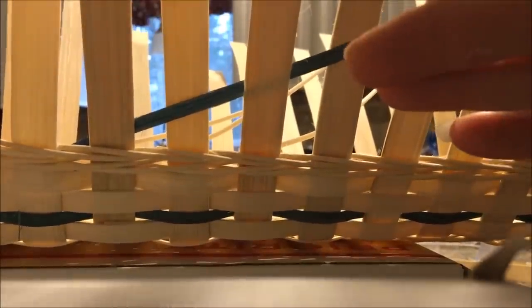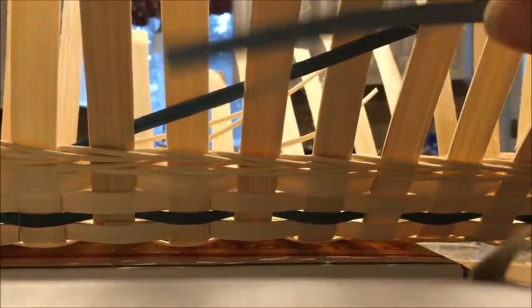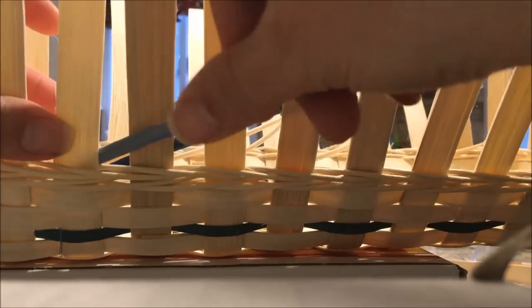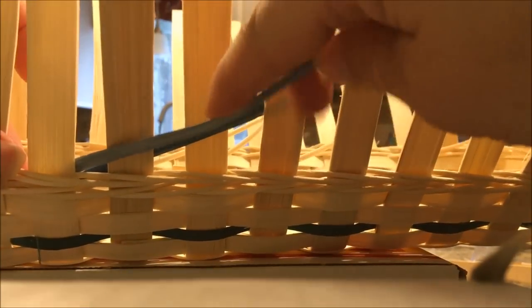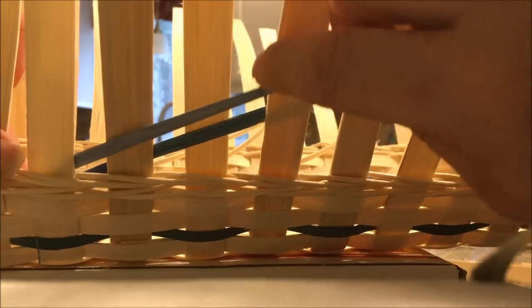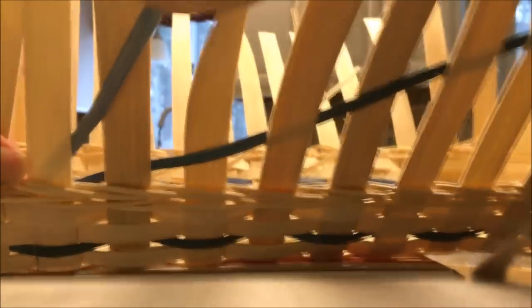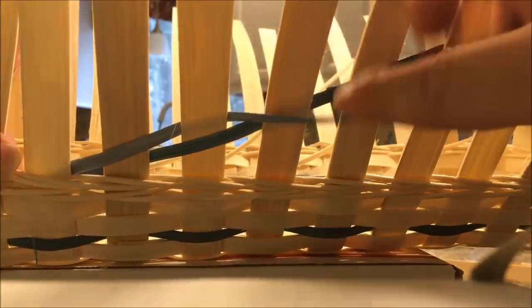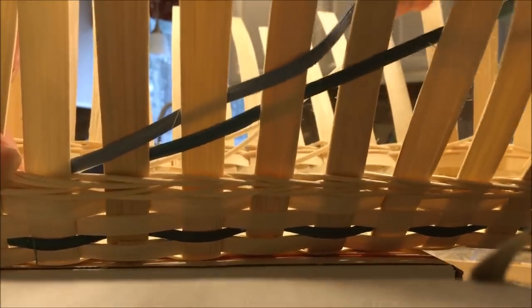Now I tend to work to the left. So on the next one, where you started under, you're going to go over. So over, you can see under. So each row will be opposite, just like in regular plate weaving. And then back to the inside.